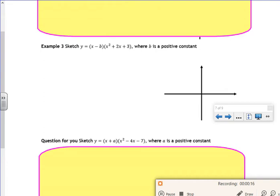So it says to sketch x minus b times x squared plus 2x plus 3. Right, so if you think if I expand this I'm going to have a positive x cubed, so know that the general shape will be a positive cubic.